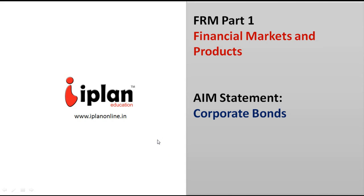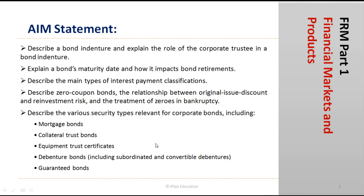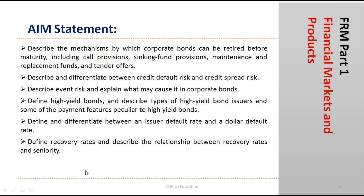FRM Part 1 Financial Markets and Products: this section covers corporate bonds. We will understand what a bond indenture is and the role of a corporate trustee, the concept of maturity date and how it impacts retirement, various types of interest payment classifications, zero coupon bonds, the relationship between original issue discount and reinvestment risk, and how they are treated in case of bankruptcy.